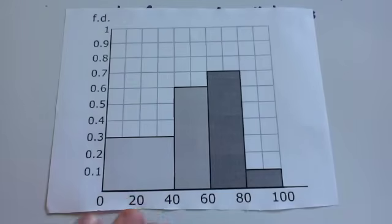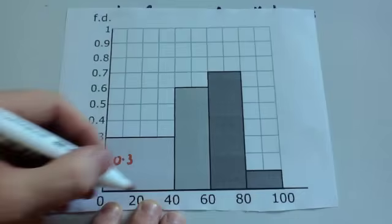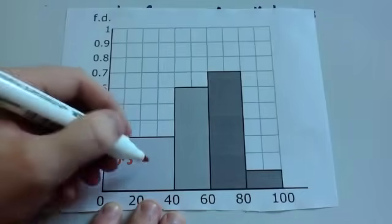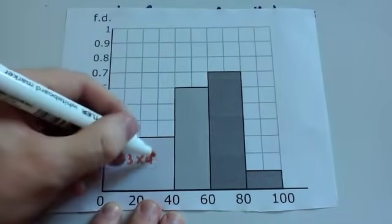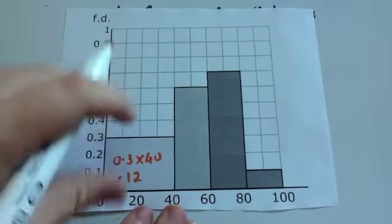So for this first bar, the frequency density is 0.3. The class width is how wide the class is, so this is 40 wide, so you're going to do 0.3 times 40. 0.3 times 40 equals 12. So there's 12 people in this bar.